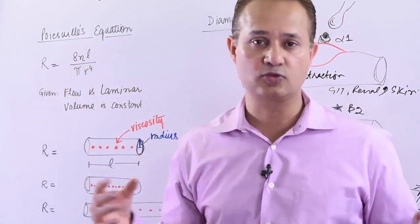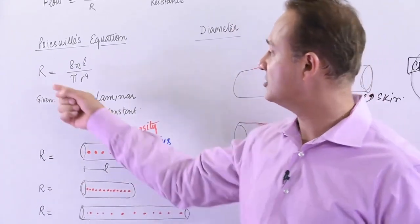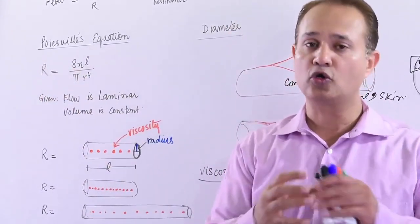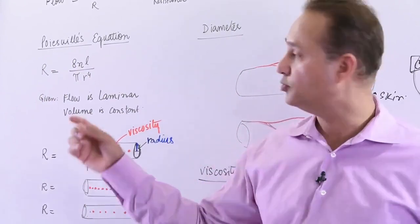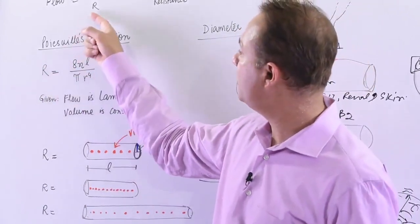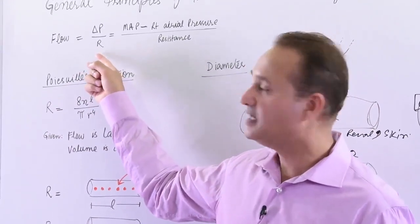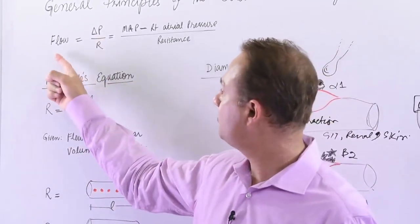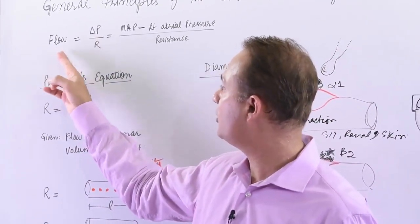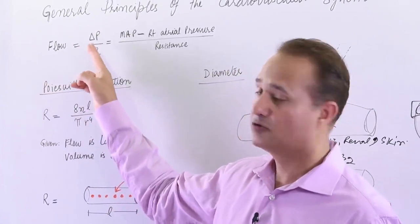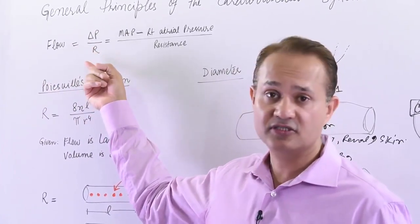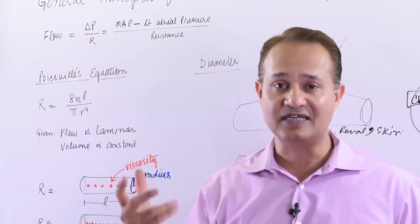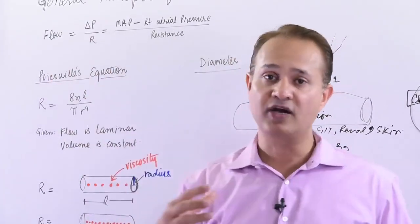The question is, what is the use of that resistance? Knowing the total peripheral resistance or knowing the resistance of a tube will allow you to plug that value into flow or pressure equations. So if we apply it, for example, to a flow equation: flow equals delta P, or pressure gradient, divided by resistance.